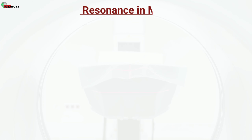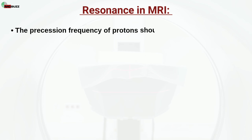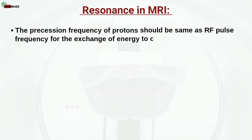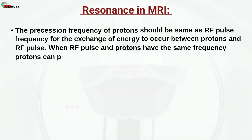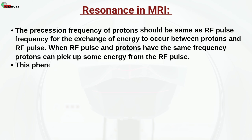Resonance in MRI: The precession frequency of protons should be the same as the RF pulse frequency for the exchange of energy to occur between protons and the RF pulse. When the RF pulse and protons have the same frequency, protons can pick up some energy from the RF pulse. This phenomenon is called resonance — the 'R' of MRI.